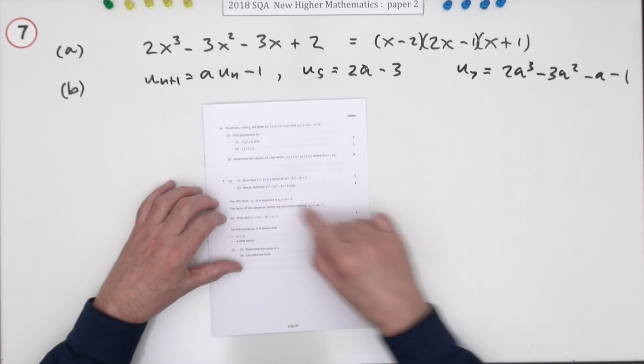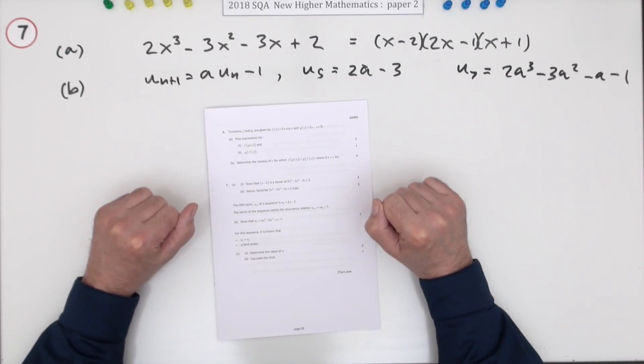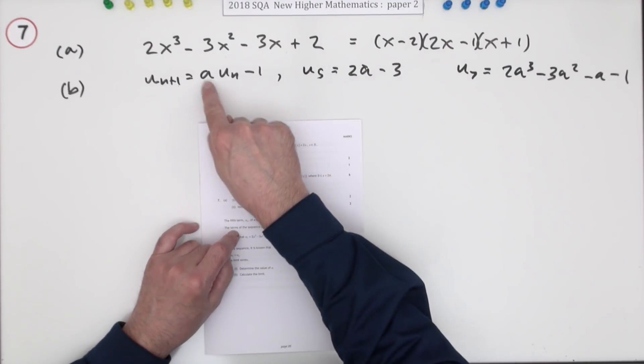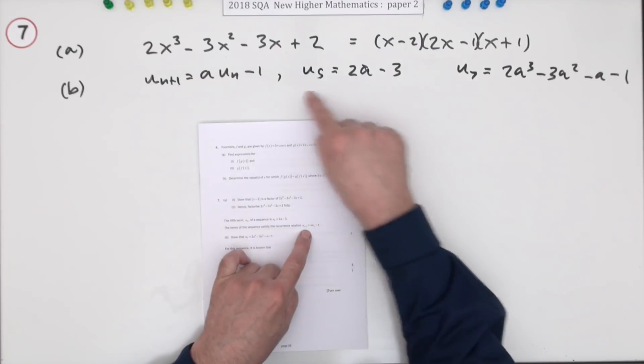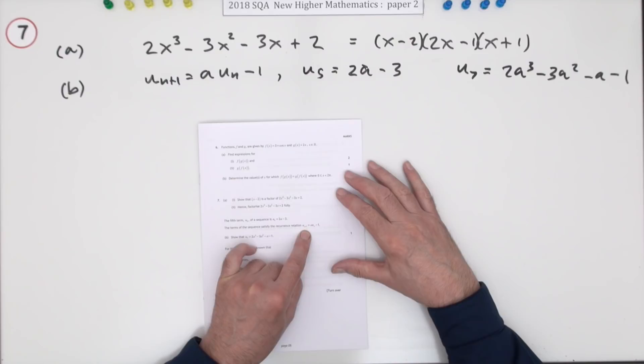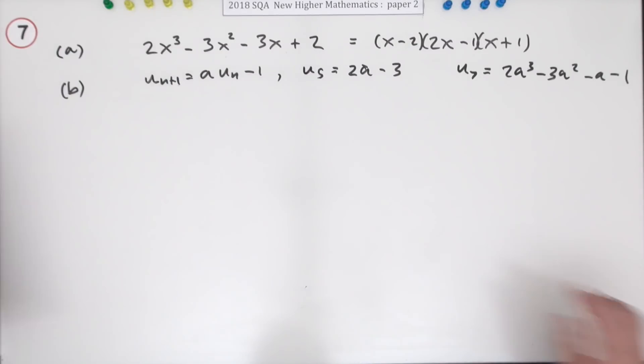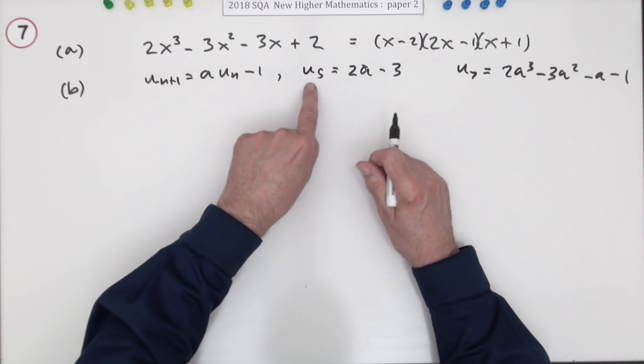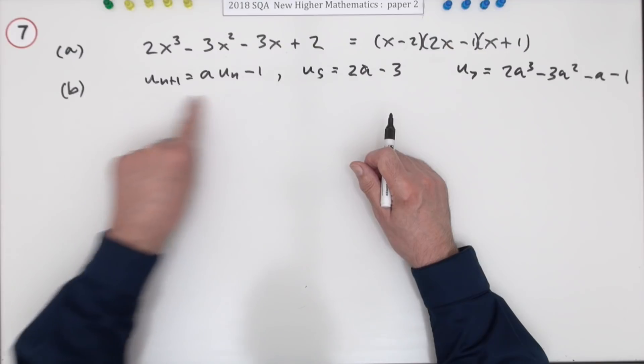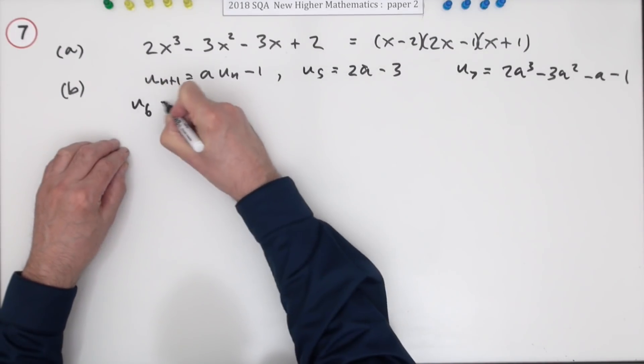So in part b. Now it switches into recurrence relations here for these final five marks. Well what are you told? You're given this form of a recurrence relation with an unknown factor. You're told the fifth term is 2a minus 3. So that's that same unknown factor in it. I need to show that the seventh term is given by this. Just for the one mark. That seems a bit mean here. Because if you know a particular term the only term you can find using a recurrence relation is the following term. So that wouldn't be u7. That would just be u6.